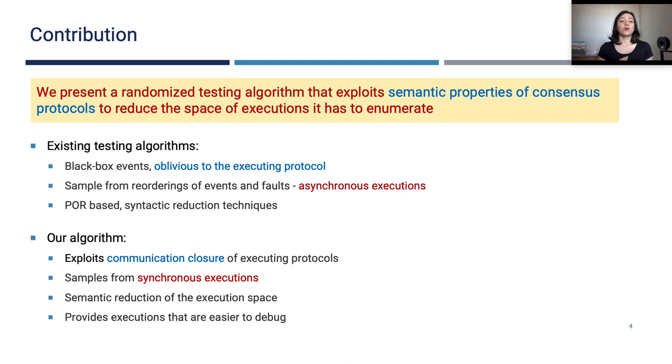In this work, we ask the question of whether we can design a testing algorithm that exploits semantic properties of consensus protocols to reduce the state space of executions the algorithm has to enumerate. And we present such a method.